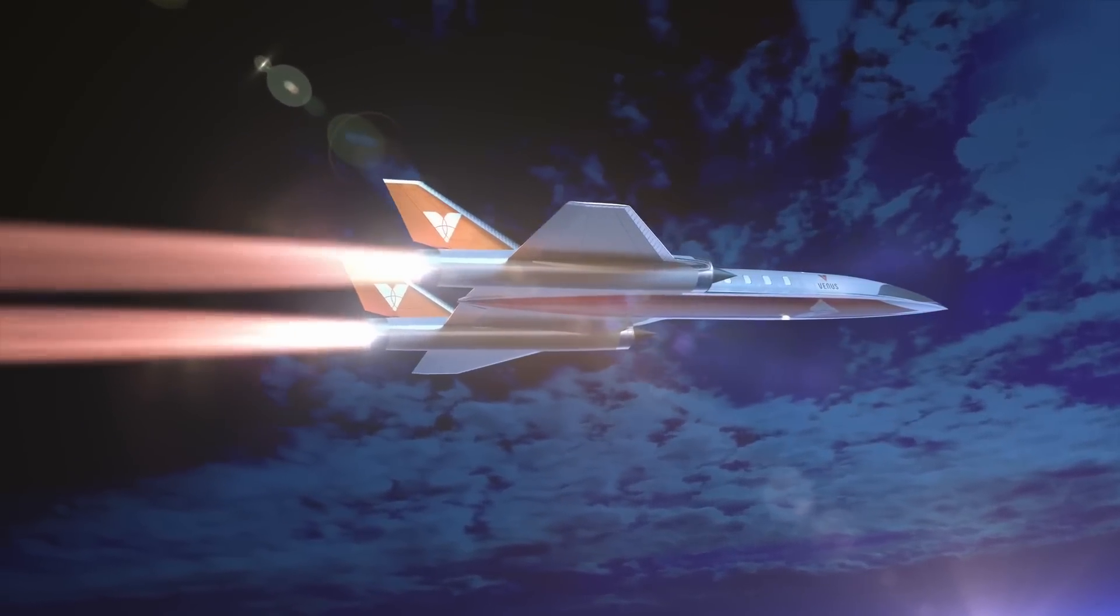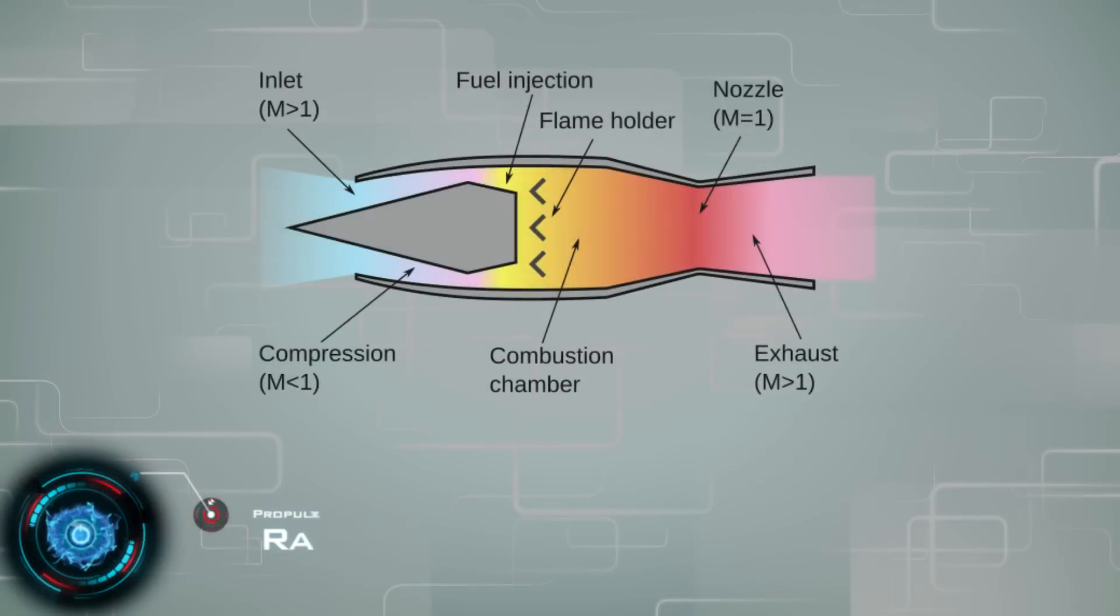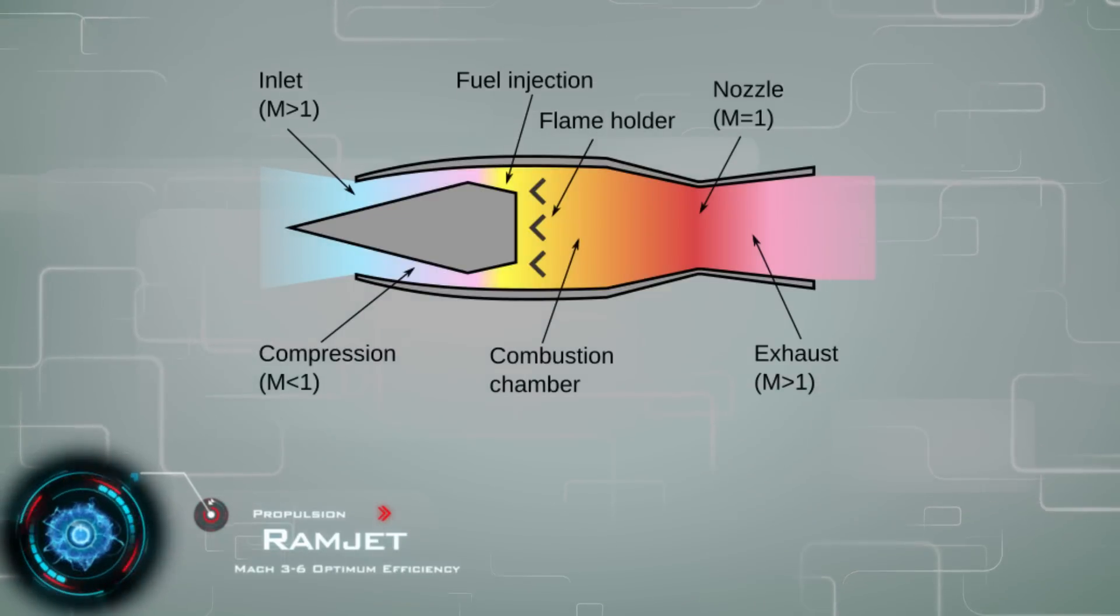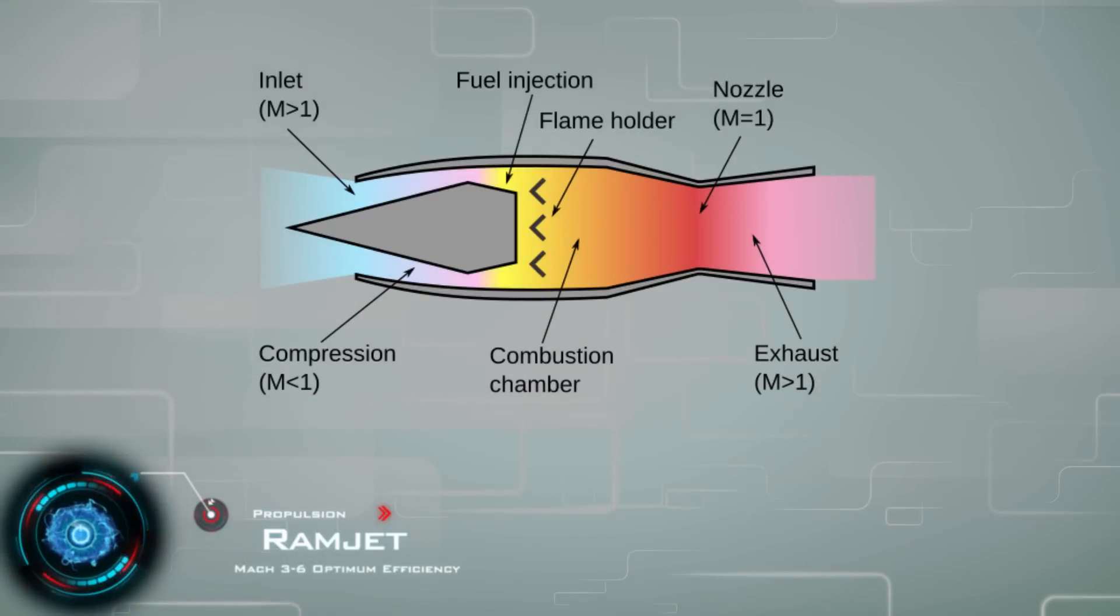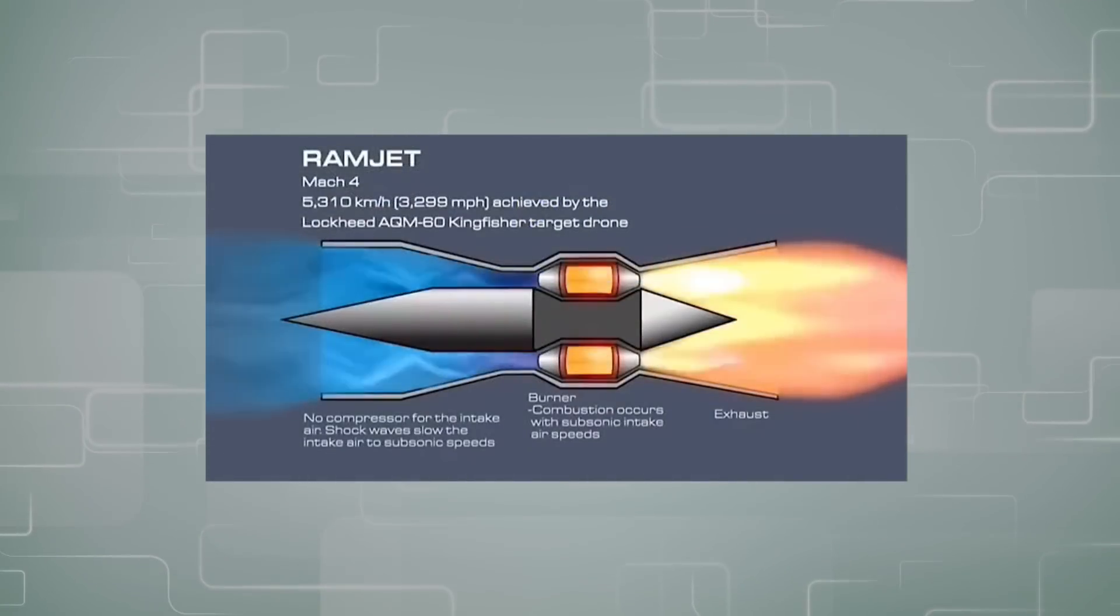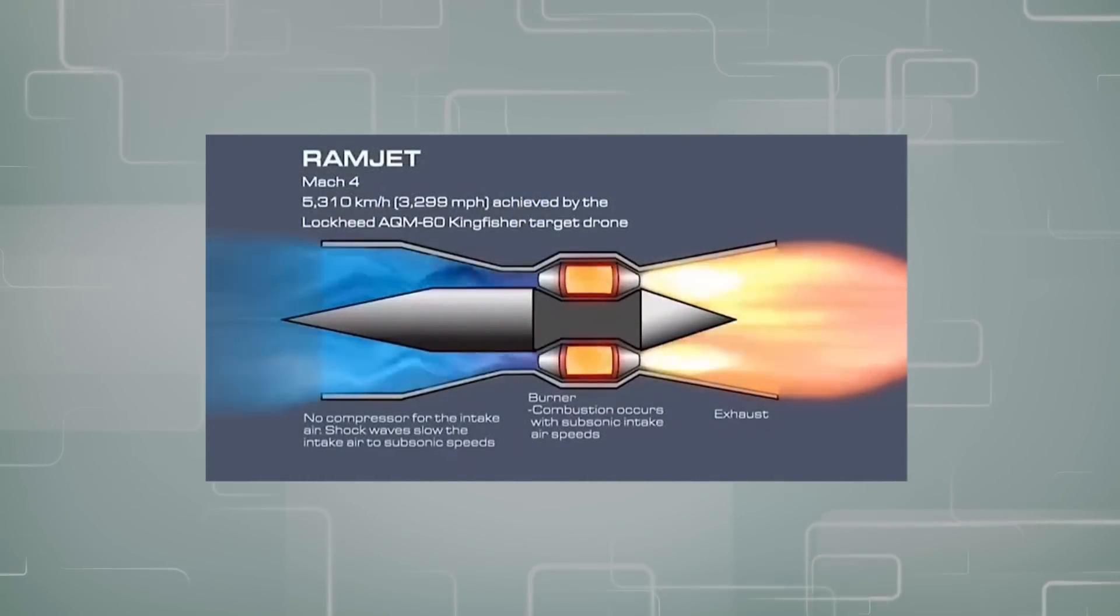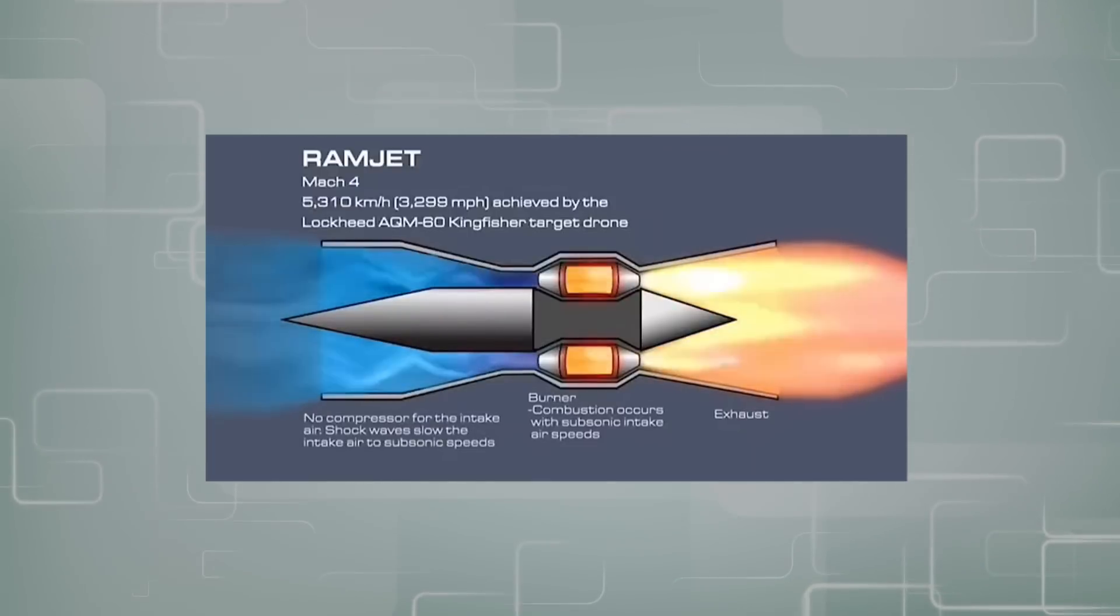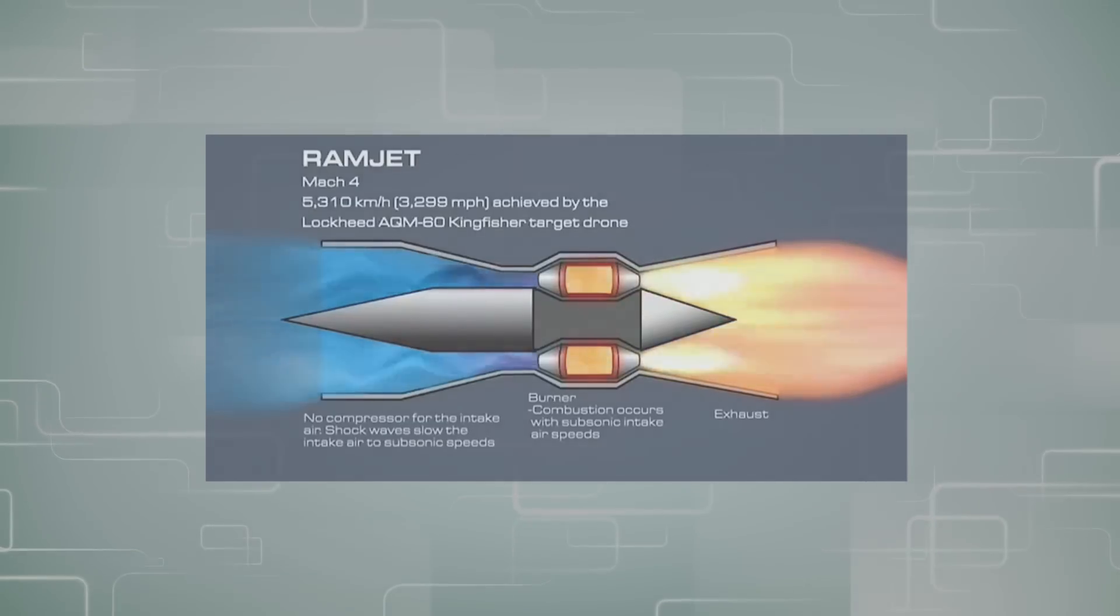A typical ramjet is a very simple design. There are no compressors or turbines and it is comprised of a fuel injector, a flame holder, and a combustion chamber. This simple setup basically introduces air, slows it down to subsonic speed, mixes it with fuel before reigniting it to supersonic speed. However this simplicity does not directly translate into a highly efficient engine.